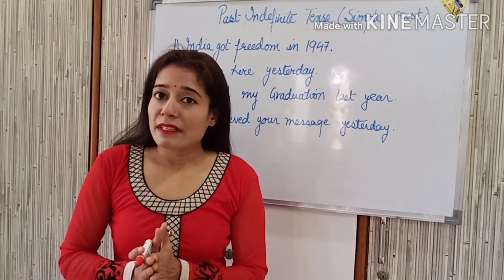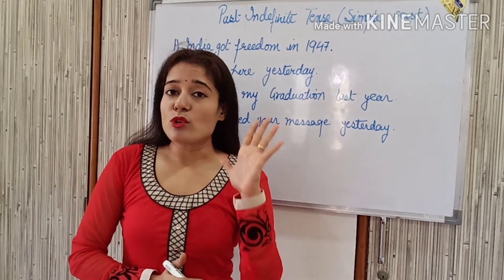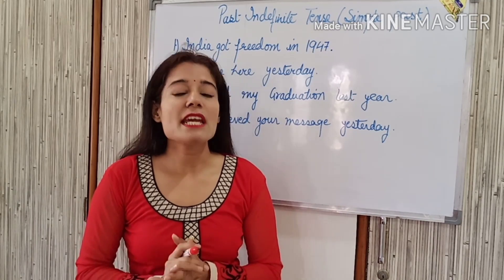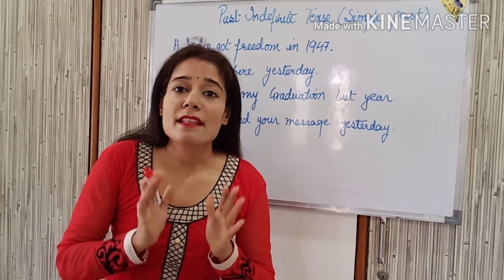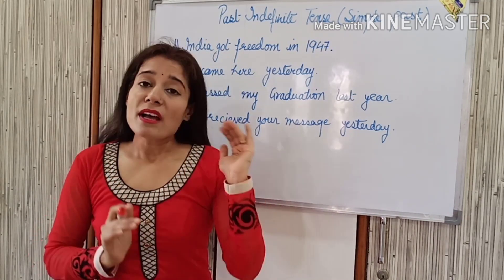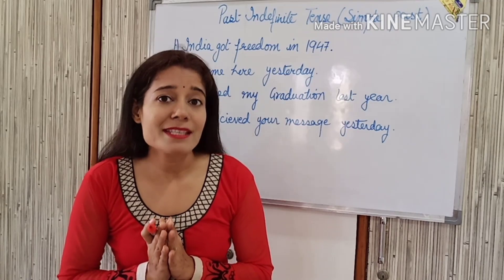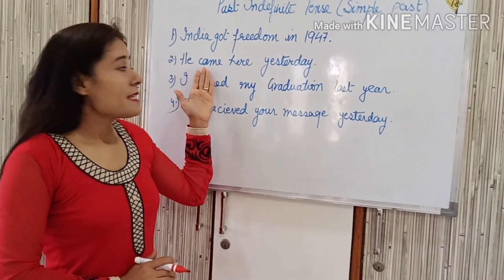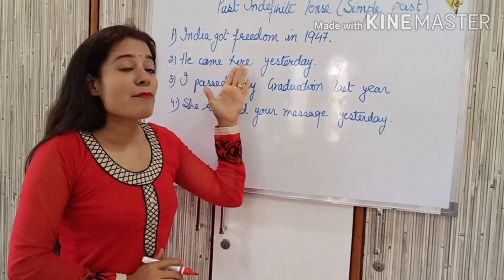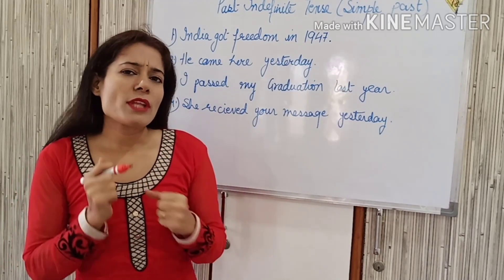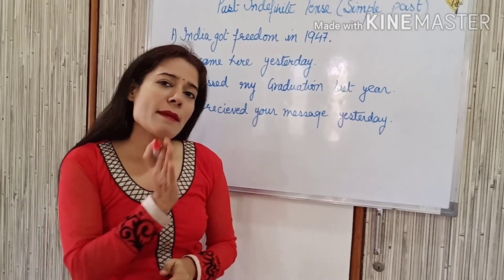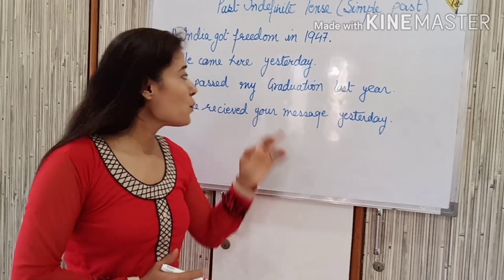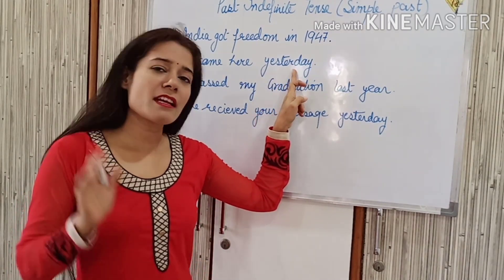So you know this thing — 1947 is talking about the old past, so definitely it is the tense which indicates past time, and that is why it is past indefinite tense. The second sentence is: he came here yesterday. We know that it is a past tense sentence because yesterday is mentioned over here.